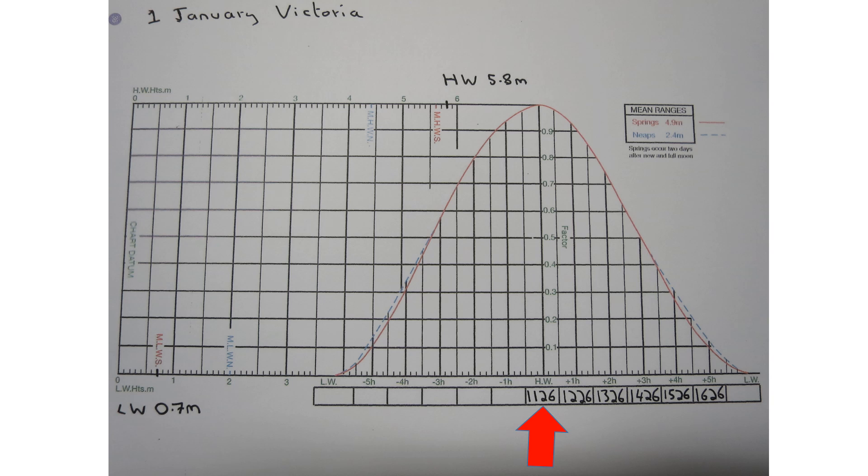Let's use the tide graph for Victoria. It's the 1st of January. High water is at 11:26. On the bottom of the graph we can fill in each hour after the high water time. So plus 1 is 12:26, plus 2 is 13:26, and so on.